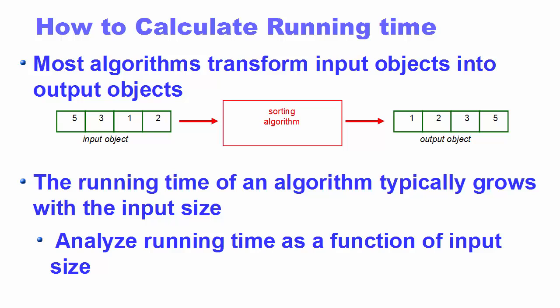How do we calculate the running time or find out the time complexity? Most algorithms transform input objects into output objects. For example, if we have an unsorted array which we want to sort, our input is the unsorted array, we apply an algorithm, and as a result we get the sorted array. It's important to note that the running time of an algorithm typically grows with the input size.